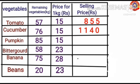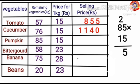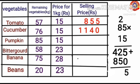Next, find the selling price of pumpkin. To find out this, multiply 85 and 15. 85 into 15: 5 into 5 is 25 — write 5 here and 2 is the carryover. 5 into 8 is 40, plus 2 is 42. 1 into 5 is 5, 1 into 8 is 8. Adding together: 5 plus 0 is 5; 2 plus 5 is 7; 4 plus 8 is 12. Selling price of pumpkin equals Rs. 1275.